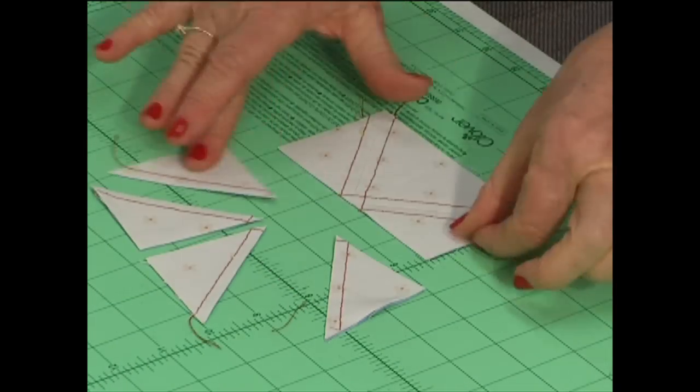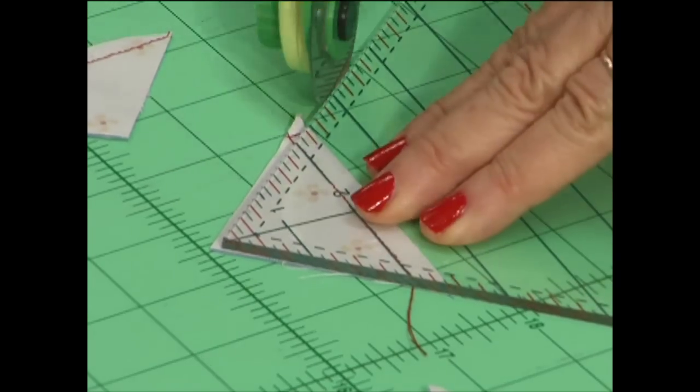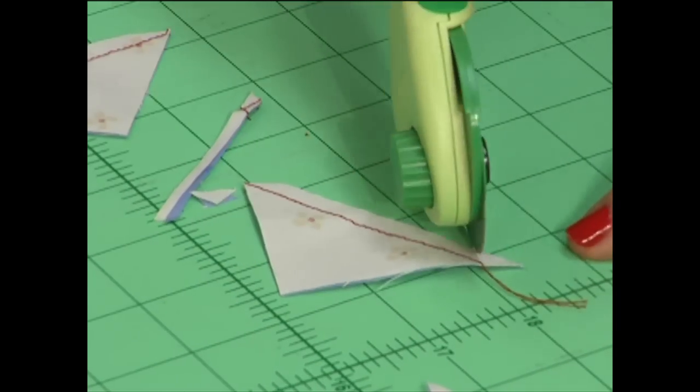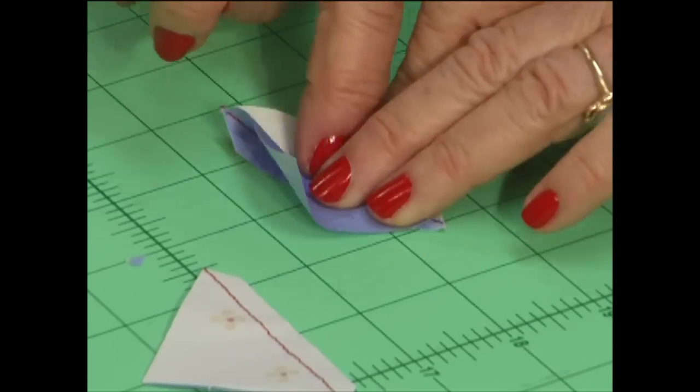Square your triangles up to two inches square. Place the six and a half inch triangle square up ruler on your stitches. Cut off the extra, trim those tips, get rid of them, and press towards the dark.